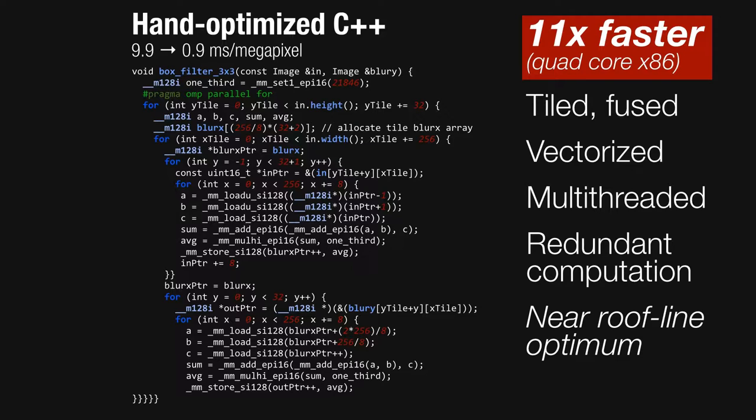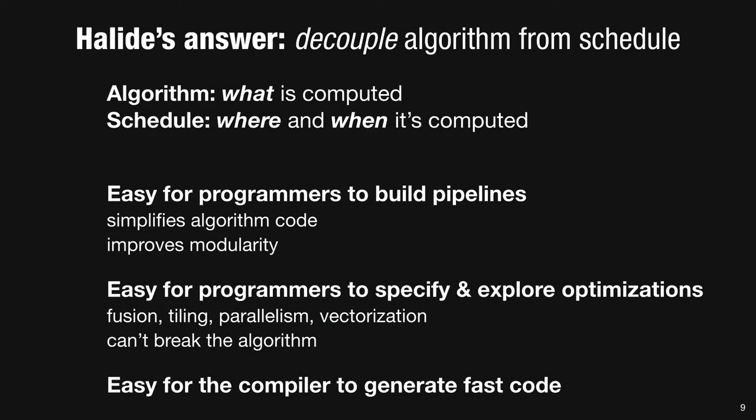It's expensive and time-consuming, and the choice of the best transformations often isn't predictable or portable across architectures. Now with Halide, we believe the right way to write this kind of code is to decouple the definition of the algorithm from the concerns of locality and parallelism. In Halide, the algorithm defines what values are computed for each pipeline stage, while the schedule defines where and when they get computed.